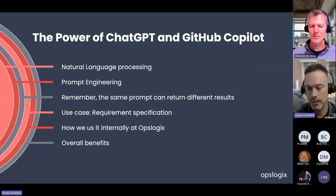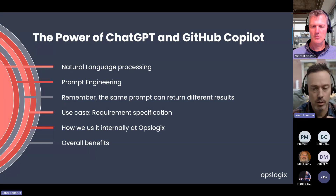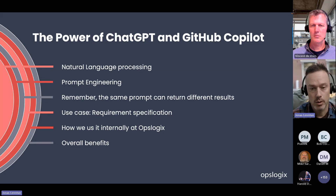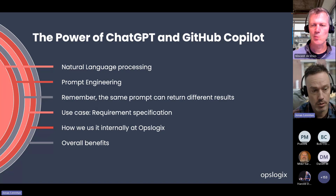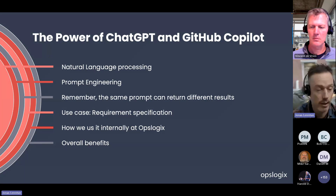So we actually tried to make this type of session a little bit more fluent. We're going through some of the chat history of ChatGPT at least, not the Copilot part. We're going to show how we can use it in the requirement specification and with creating the scripts. We use it a lot internally at OpsLogix in different ways, and it helps us speed up delivery and deliver more value to our customers quickly.